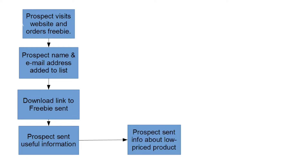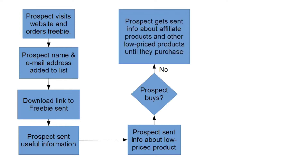Once that's done, your prospect is sent information about your low-priced product with the sales link. Most people won't buy on the first contact for an offer. So you keep them on the prospect list and send them information about affiliate products and other low-priced products until they actually make a purchase, while continuing to send them all the useful information as well.